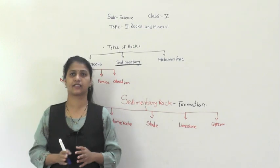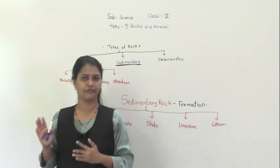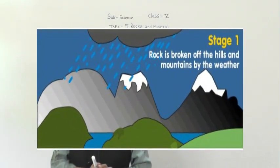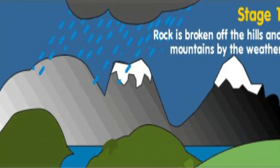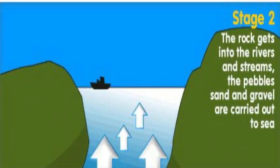There are mainly two seasons: summer and winter. During summer there is extreme heat. If you look at a mountain, mountains are made up of rocks. Repeated heating and cooling of the mountain by rain, wind, and sunlight breaks the rocks into small pieces. These rocks are then carried by rain and strong wind through rivers and seas.